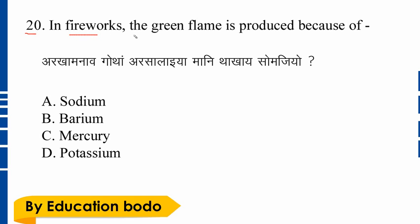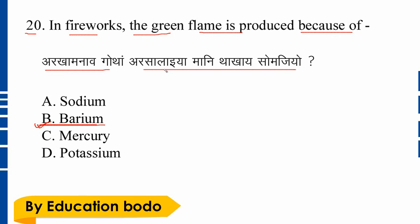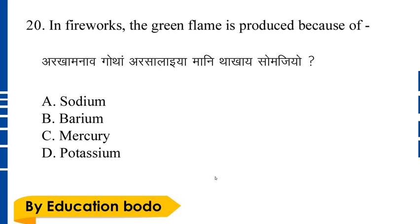Question number twenty: In fireworks, the green flame is produced because of which element? Option B is the right answer.